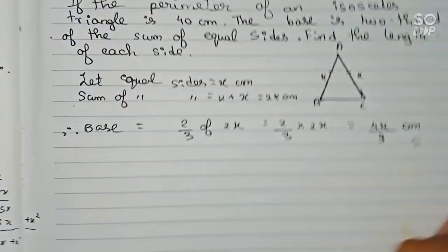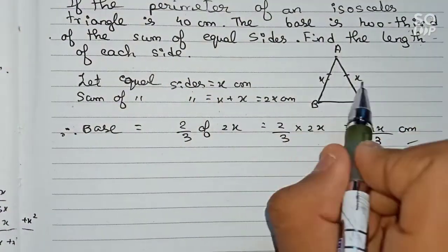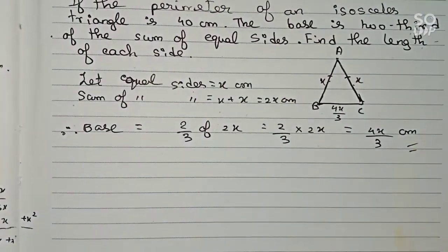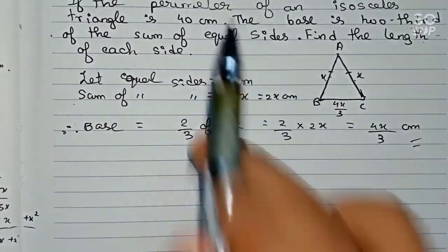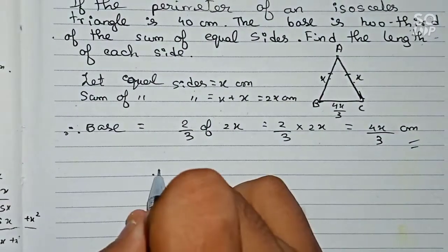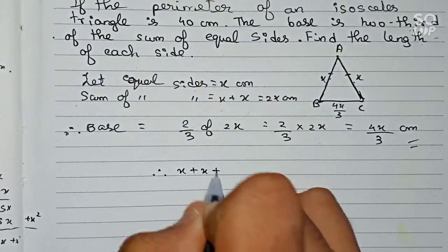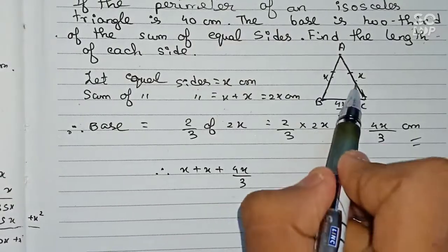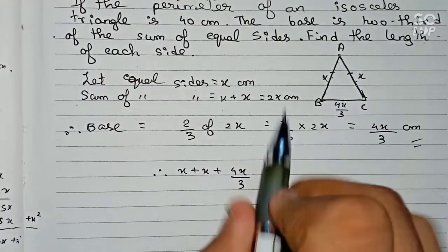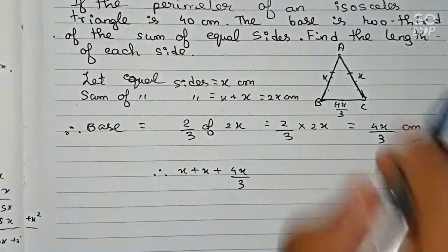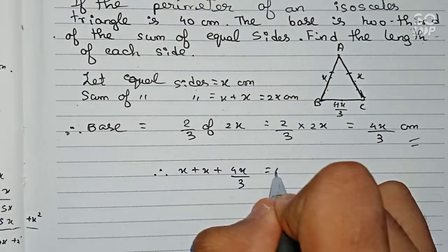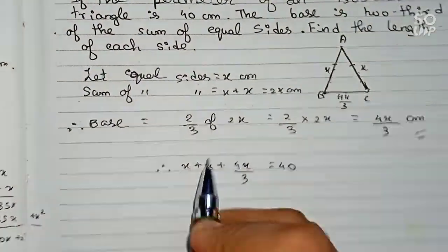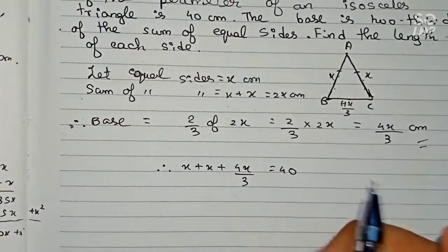Now we have all three sides: x centimeters, x centimeters, and 4x/3 centimeters. The perimeter is given as 40 centimeters. Therefore, x plus x plus 4x/3 equals 40.